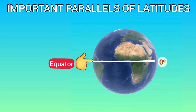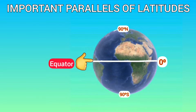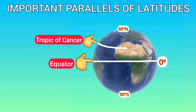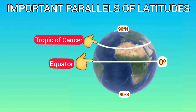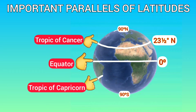Besides the equator, the north pole, and the south pole, we have four other important parallels of latitudes. The first one is the Tropic of Cancer — it is in the northern hemisphere and its value is 23 and a half degrees north. The second one is the Tropic of Capricorn.